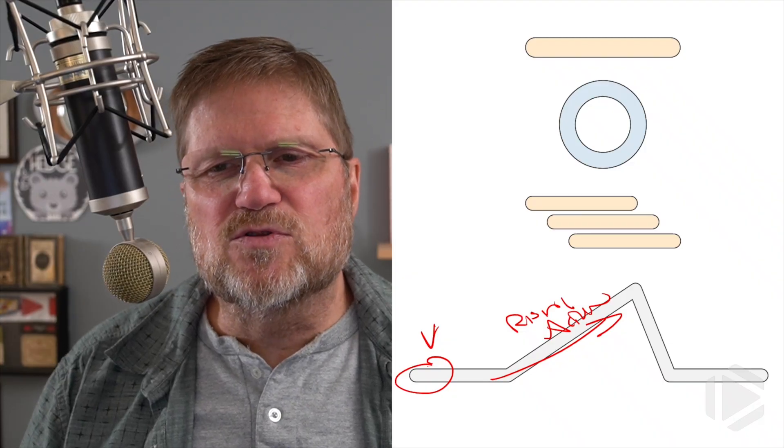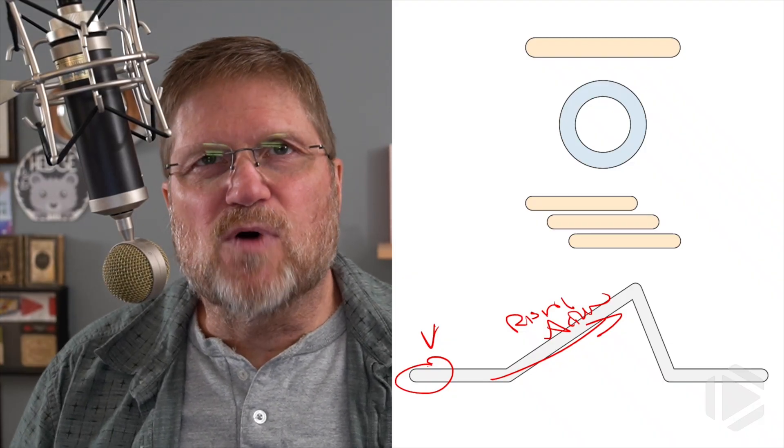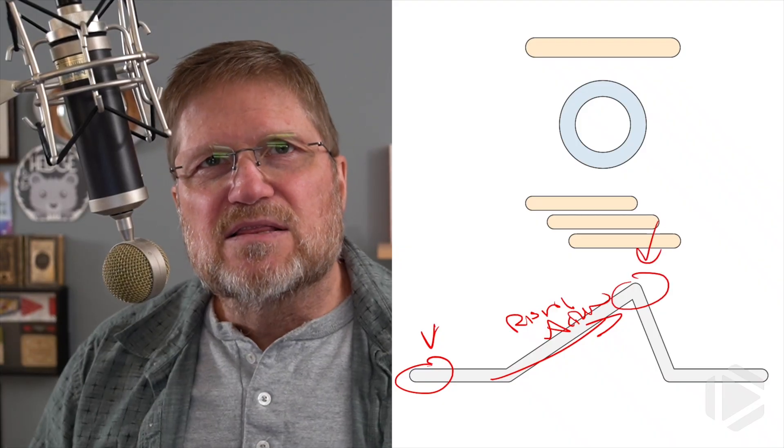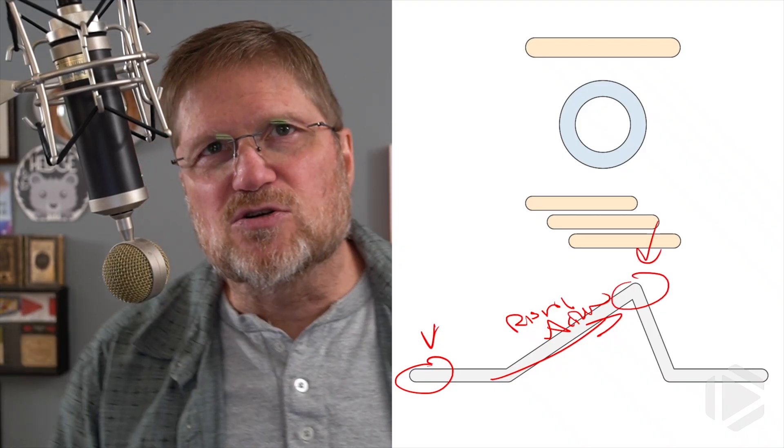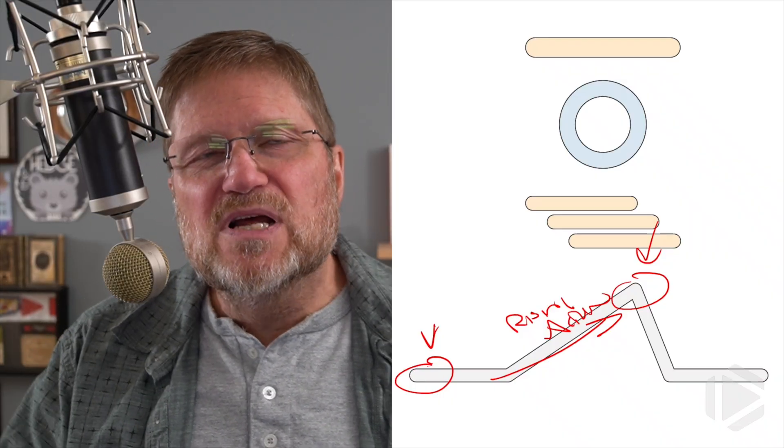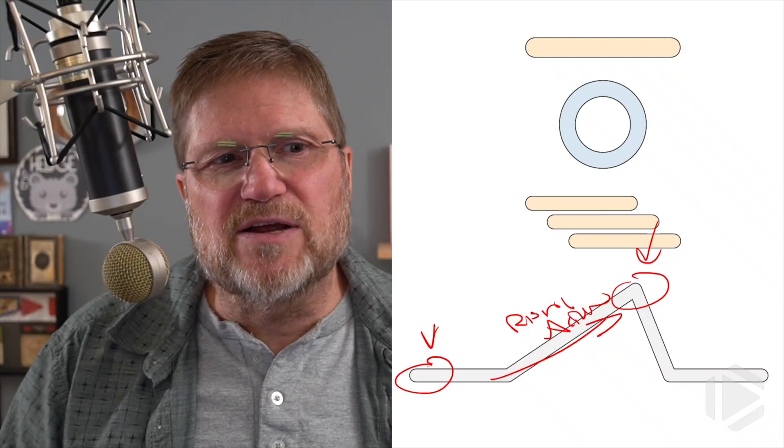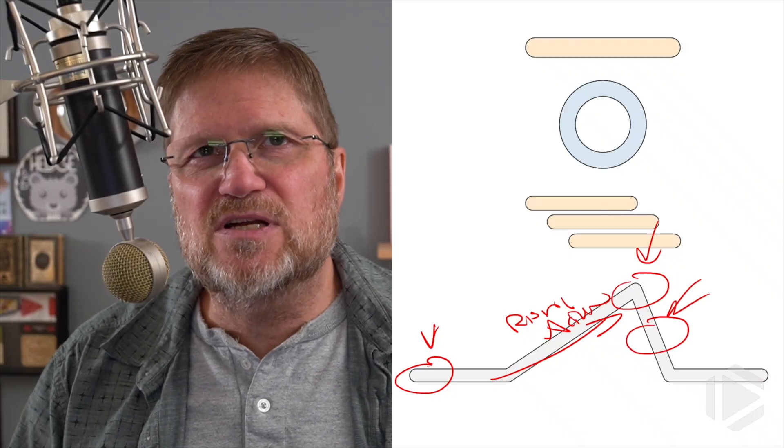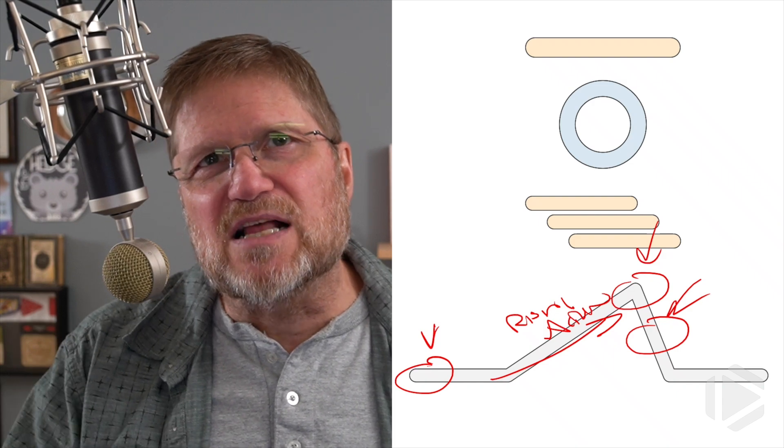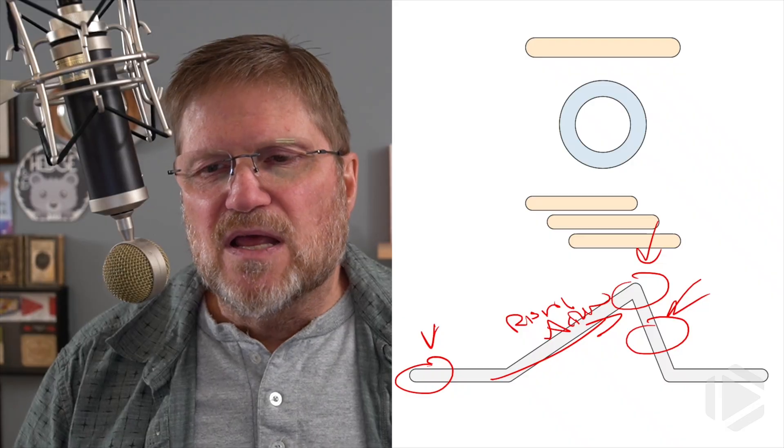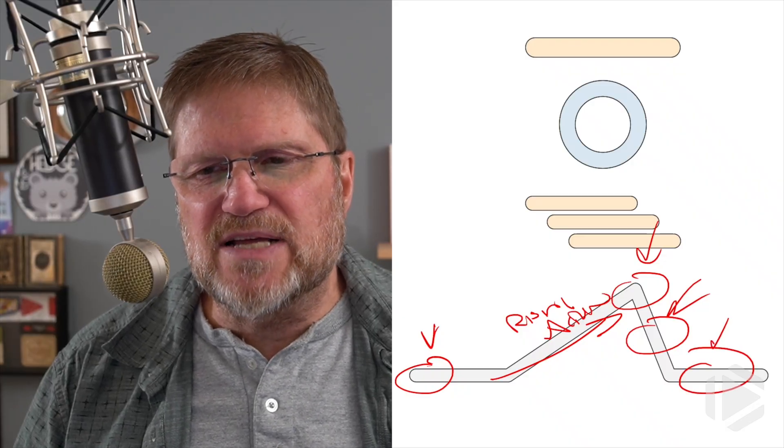So once I go through the rising action where I build tension, I come to what's called the climax. This is where everything turns, where the way forward suddenly becomes clear at this point. Then I have what I call my falling action where things are being consolidated. The hero is on his way home, et cetera.